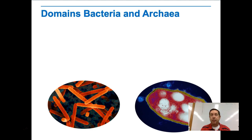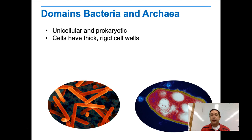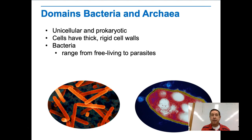Let's look at these domains. Why do we have two domains that are each only one kingdom? There are two different kinds of bacteria: the bacteria domain, which is the eubacteria kingdom, and the archaea, which is the archaeobacteria kingdom. Both are unicellular and prokaryotic, and both have cells with thick, rigid cell walls, but bacteria have a different type of cell wall.